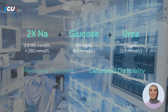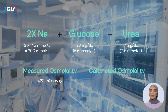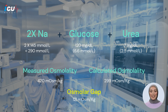The serum osmolality was measured at 420 mMol/kg, but the calculated osmolality based on the levels of sodium, glucose, and urea was only 299 mMol/kg, indicating an osmolar gap of 129 mMol/kg.